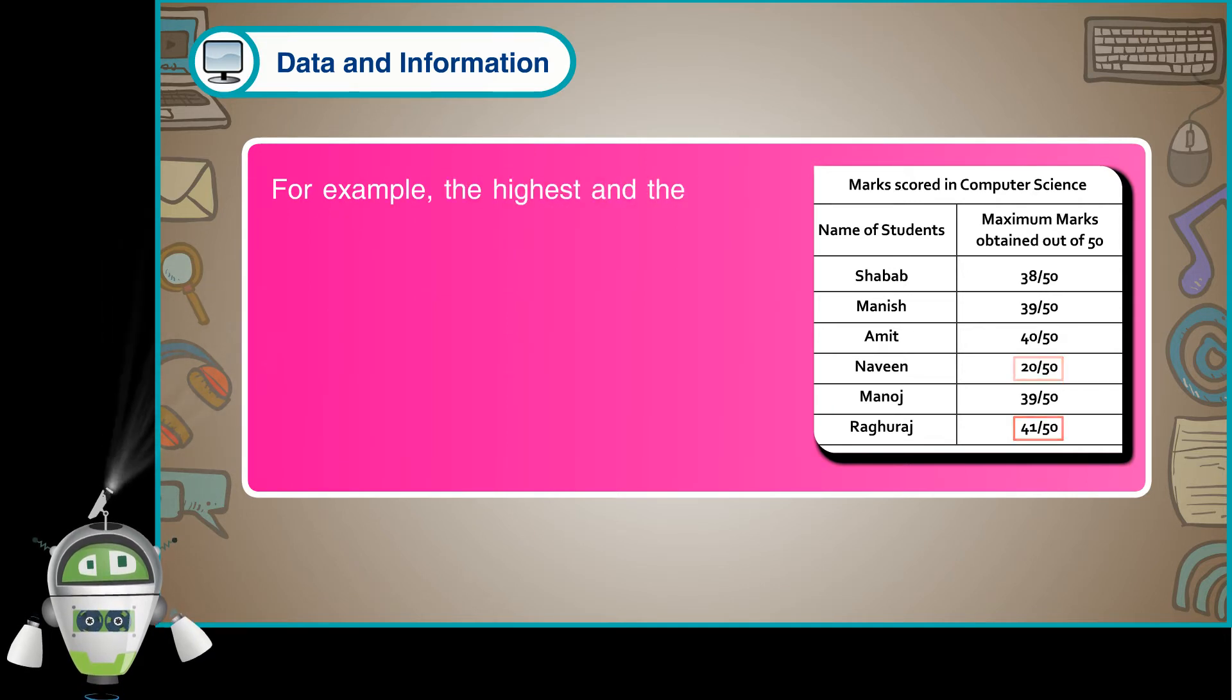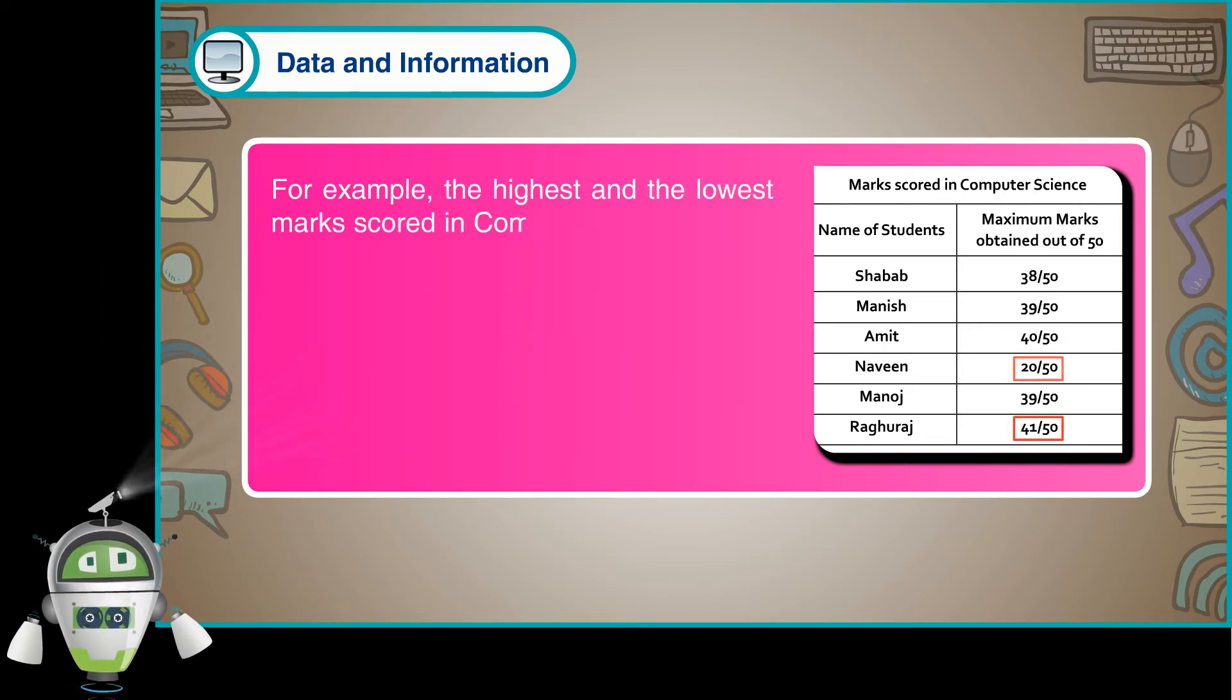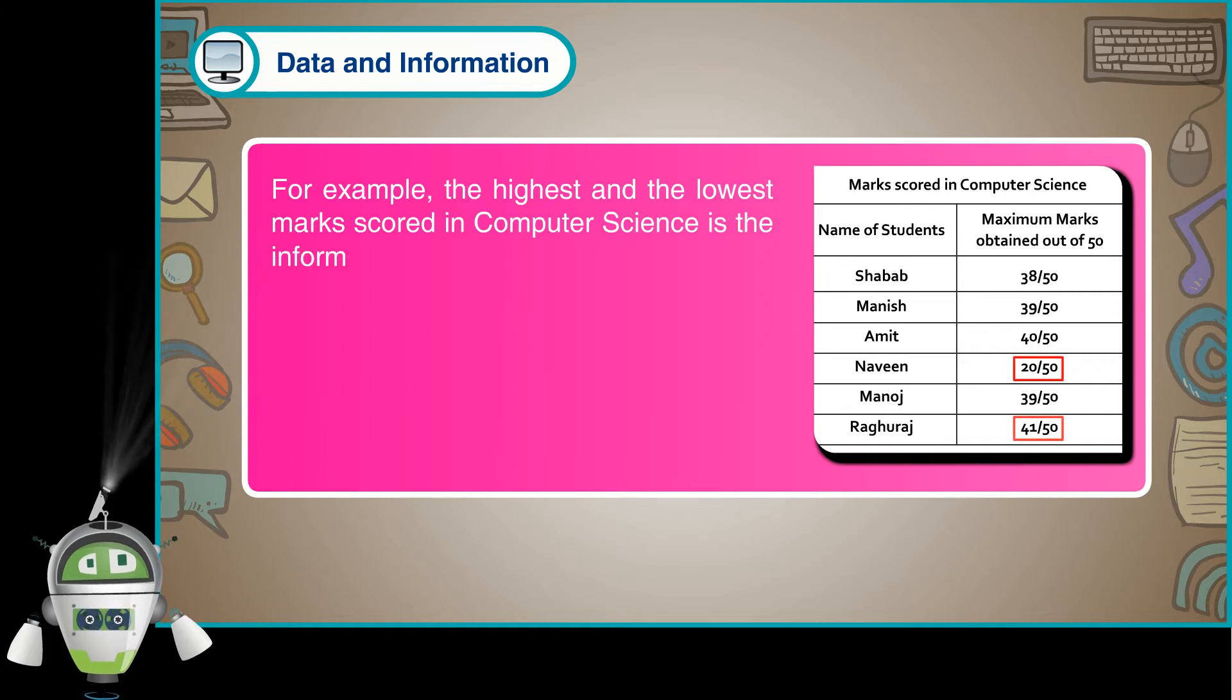For example, the highest and the lowest marks scored in computer science is the information that can be derived from a given data.